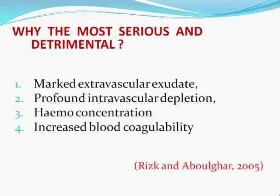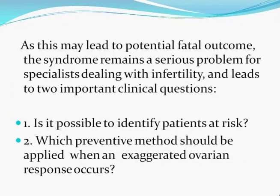Why is it considered to be more serious and detrimental? Because of marked extravascular exudate, profound intravascular depletion, it results in hemoconcentration and increased blood coagulability. As this may lead to a potentially fatal outcome, the syndrome remains a serious problem for specialists dealing with infertility and leads to two important clinical questions: is it possible to identify the patient at risk, and which preventive method should be applied when an exaggerated ovarian response occurs?